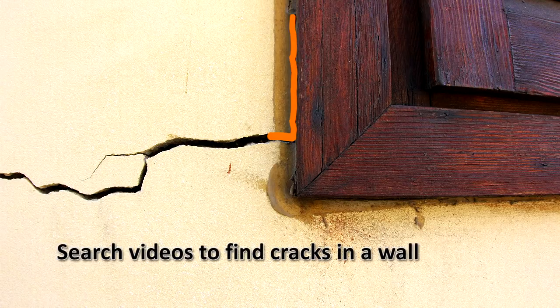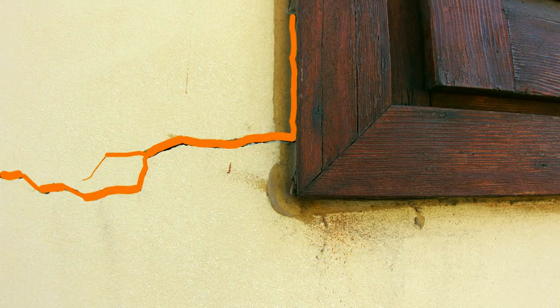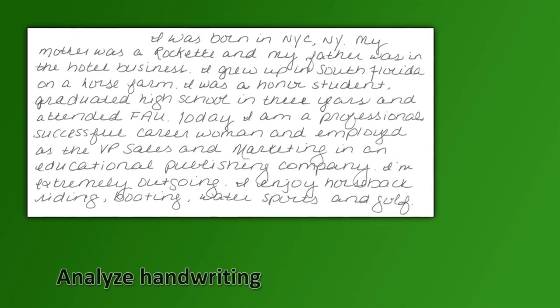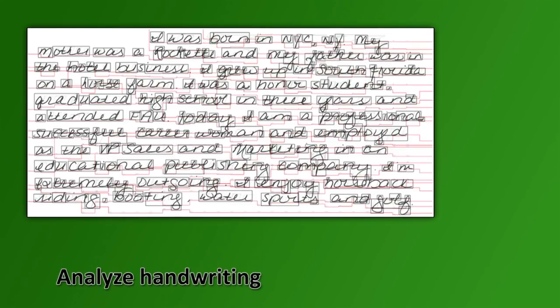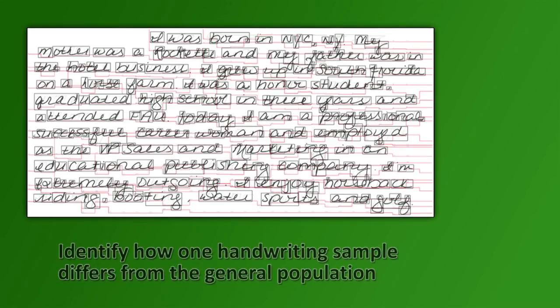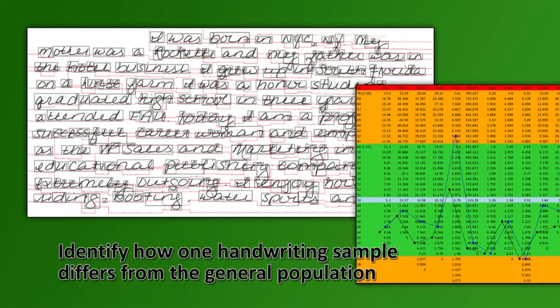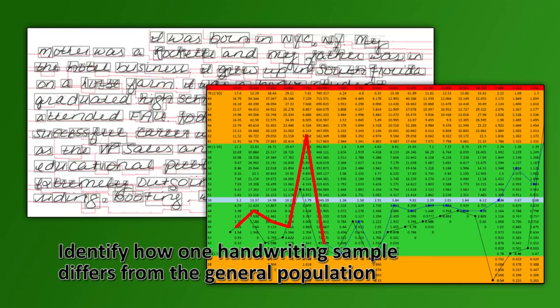Software can be developed to search videos to find cracks in a wall, or to compare the slant, height, and width in a writing sample and identify variations of one person's handwriting from a reference population.